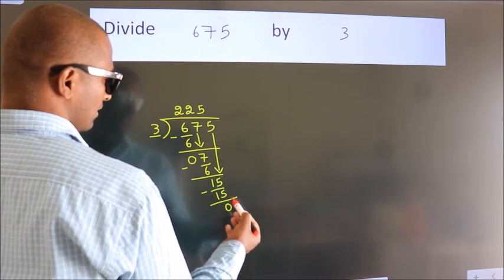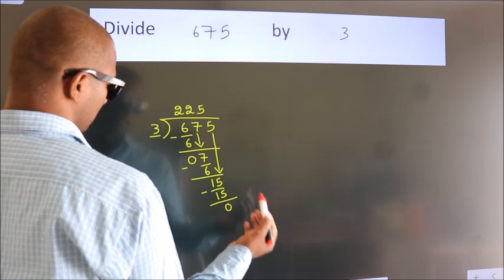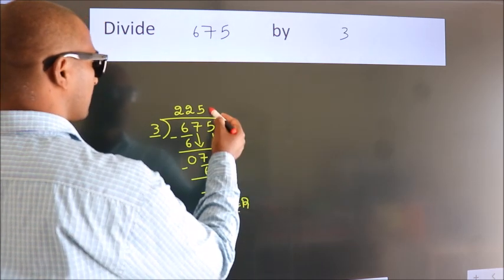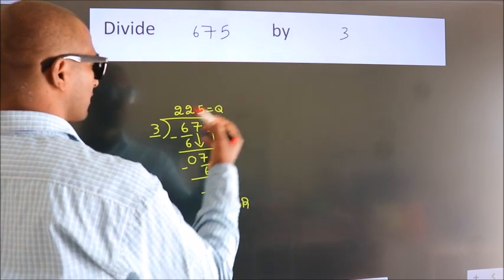After this, no more numbers to bring down. So we stop here. This is our remainder. This is our quotient.